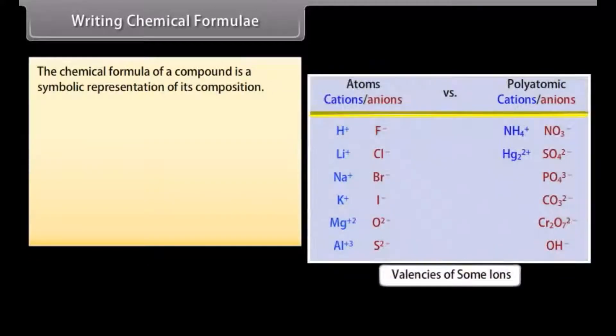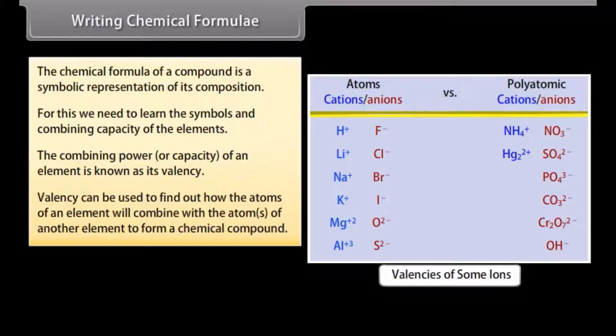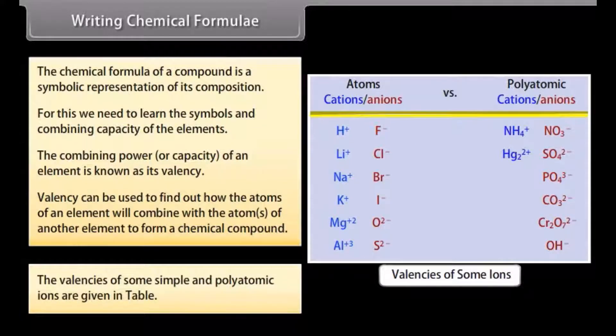Writing chemical formula: The chemical formula of a compound is a symbolic representation of its composition. For this we need to learn the symbols and combining capacity of the elements. The combining power or capacity of an element is known as its valency. Valency can be used to find out how the atoms of an element will combine with the atoms of another element to form a chemical compound. The valencies of some simple and polyatomic ions are given in table.